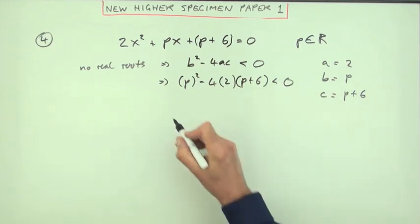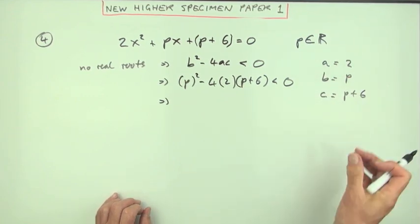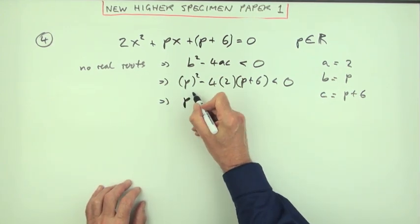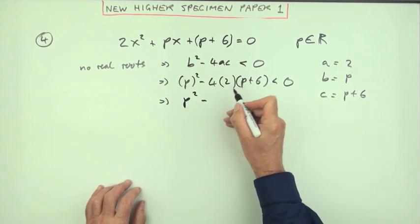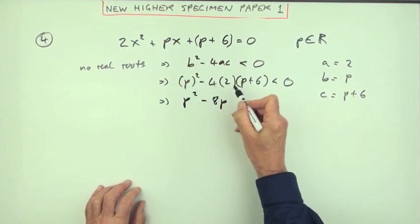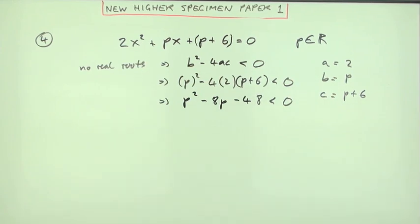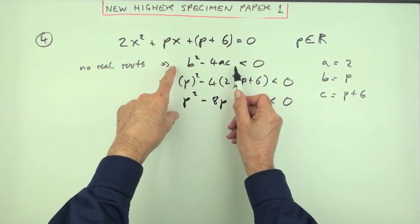Let's tidy this up. p² that's p², 4 times 2 is 8, so minus 8 times this bracket: minus 8p and minus 48, less than zero. The first two marks for getting down to this: one for this condition and one for identifying the appropriate coefficients.